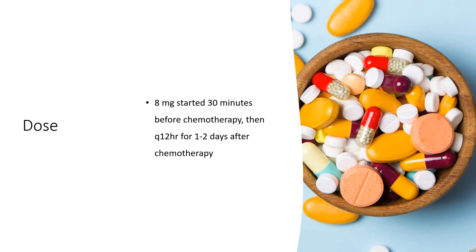Zofran ODT: Using dry hands, carefully remove from blister pack immediately before use. IV dosing: 0.15 mg/kg over 15 minutes administered 30 minutes before chemotherapy, then 4 hours after first dose, not to exceed 16 mg. Note: 32 mg is no longer recommended because of increased risk of QT prolongation. For postoperative nausea and vomiting prophylaxis: 4 mg IM immediately before anesthesia or after procedure, or 16 mg PO 1 hour before anesthesia. Patients greater than 80 kg may need an additional 4 mg.